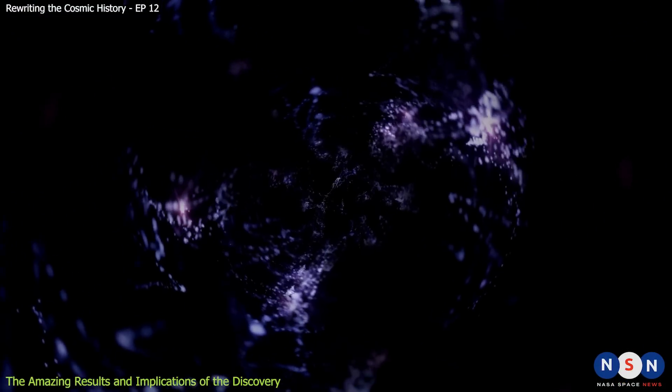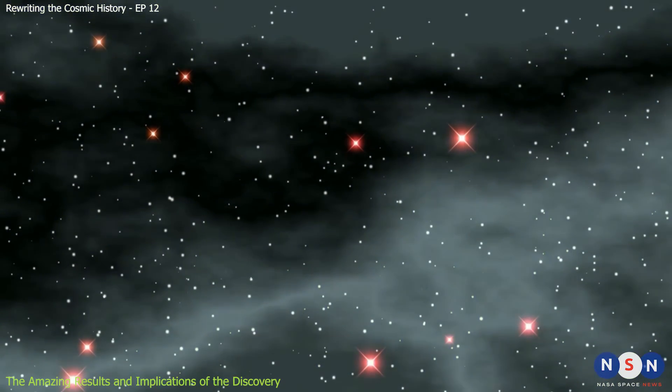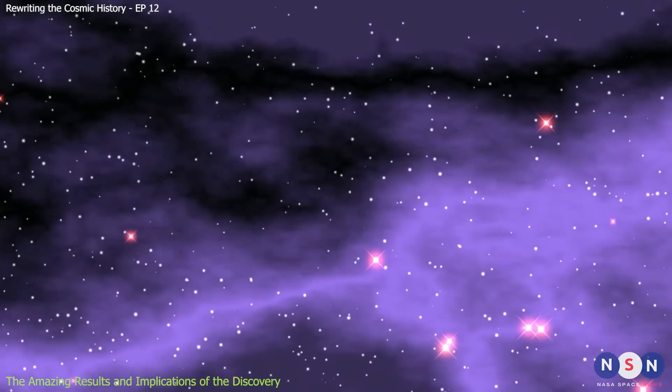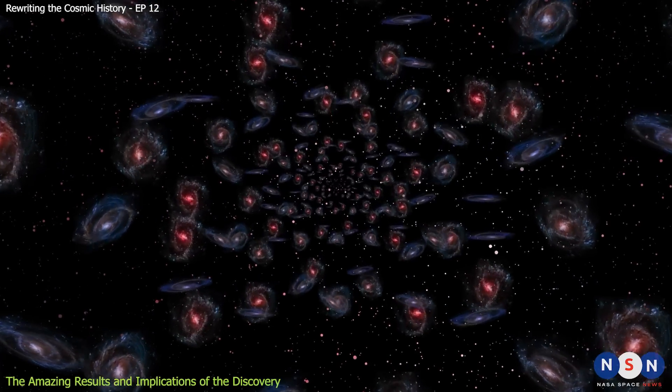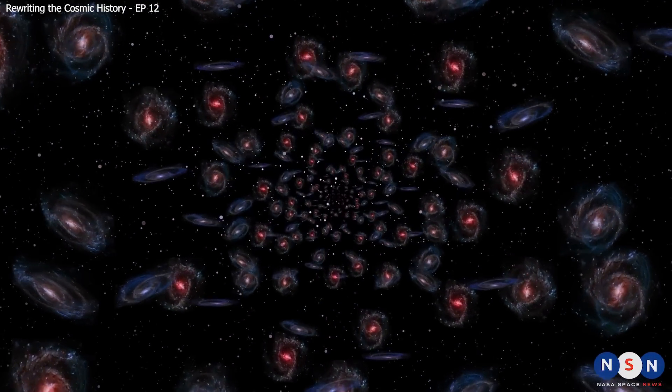They show that star formation and ionization were already happening at very high levels when the universe was very young. This also shows that there were a variety of galaxy types and behaviors during this epoch.